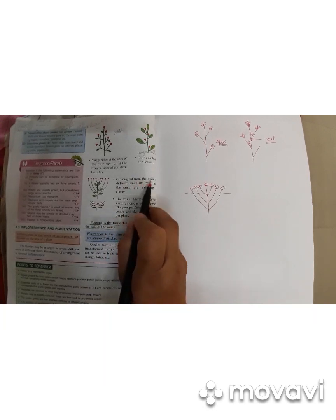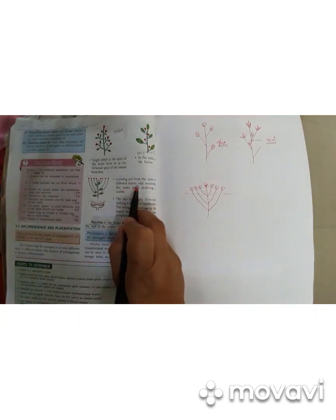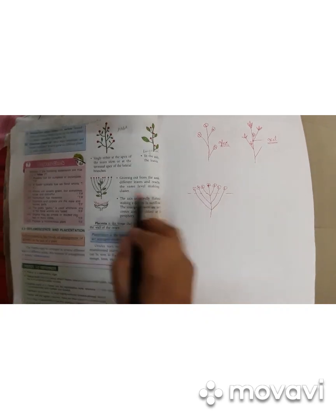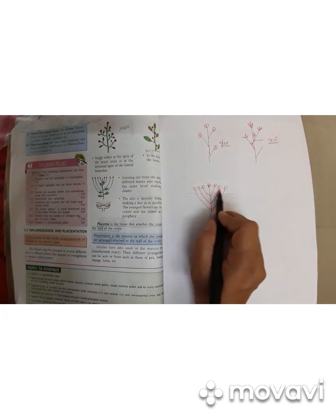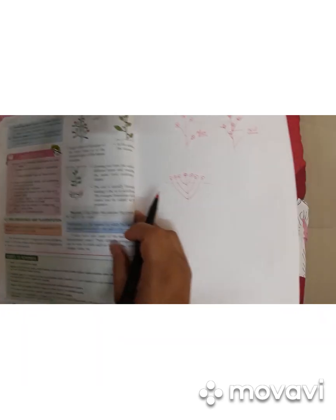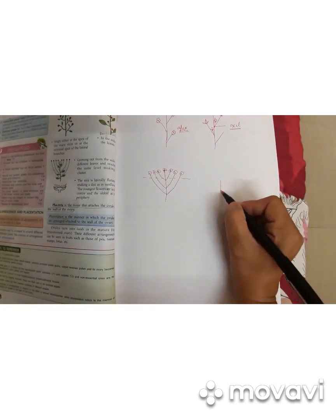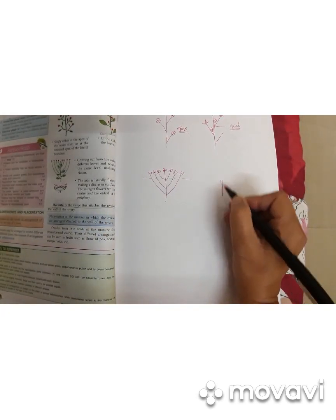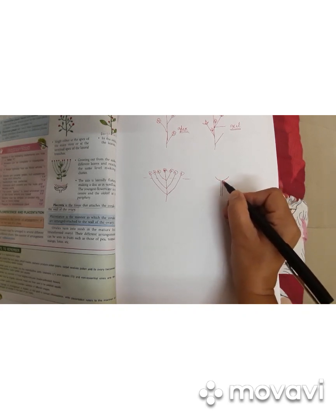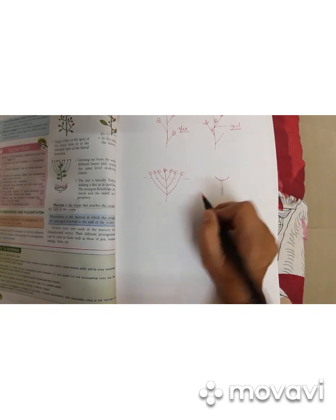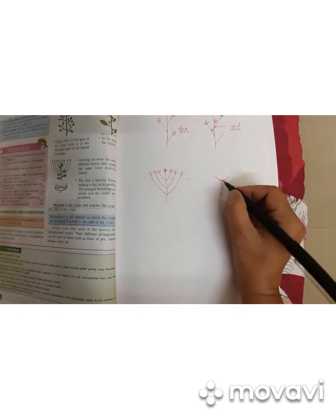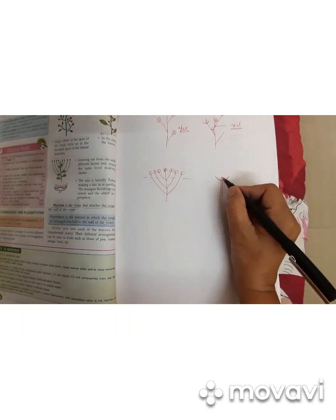The flowers grow out from the axils of different leaves and reach the same level, making a cluster. One more type is when the main branch forms a sort of receptacle — a disc-shaped structure — at the tip, and the flowers are born here. We normally call it centripetal manner.